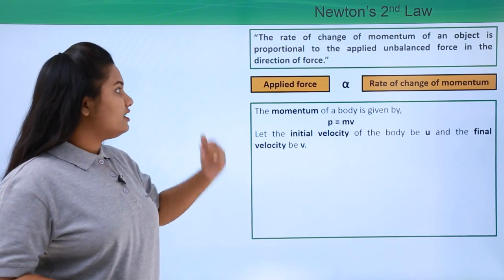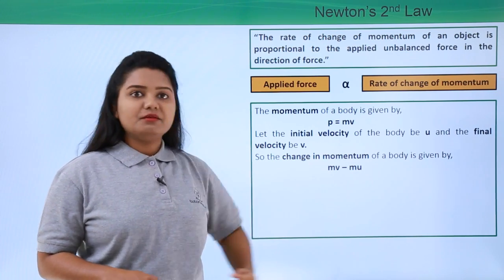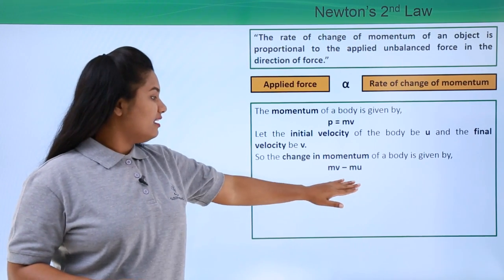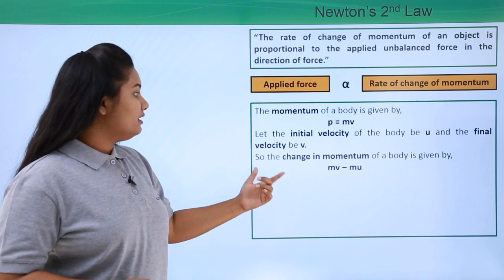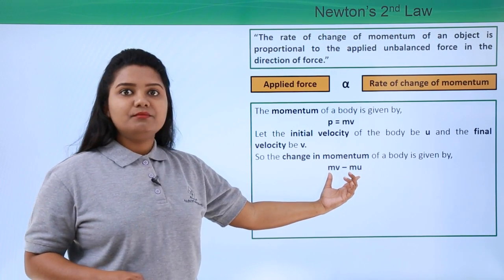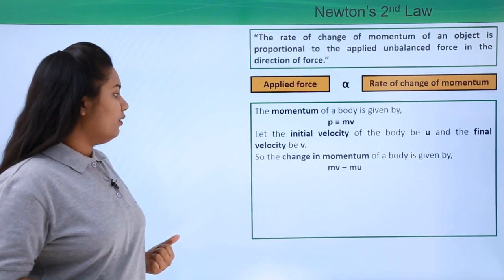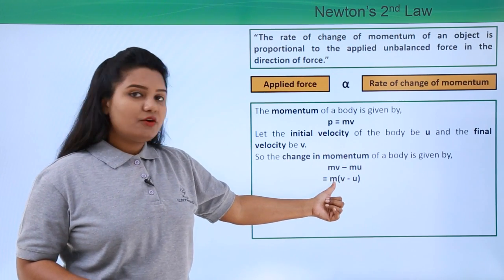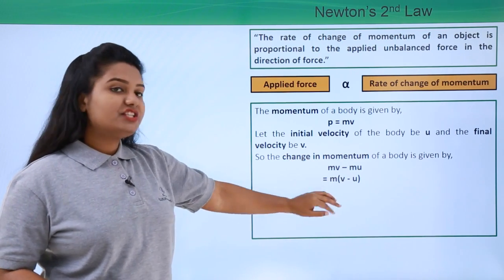The change in momentum of the body will be equal to the final momentum minus the initial momentum, which is mv minus mu. Taking m common, this gives m(v - u). So this is the change in momentum of the body.